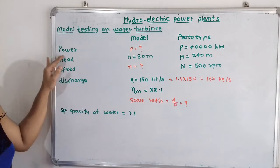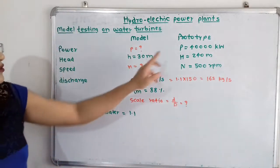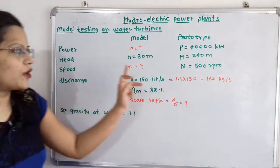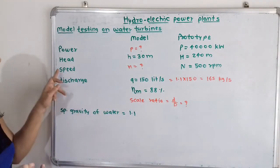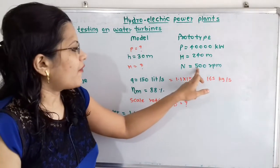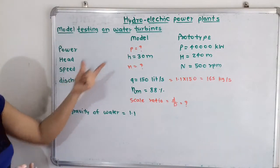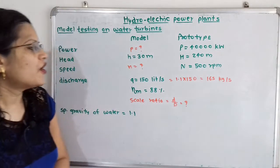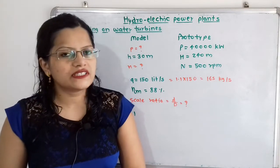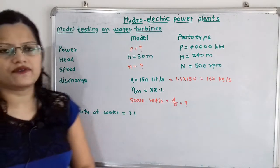Power developed for the prototype is given: P equals 40,000 kilowatt. Head for the prototype is 240 meters and for the model it is 30 meters. Speed for the prototype is capital N equals 500 RPM. Discharge for the model is given: q equals 150 liters per second, which we will convert into standard units.